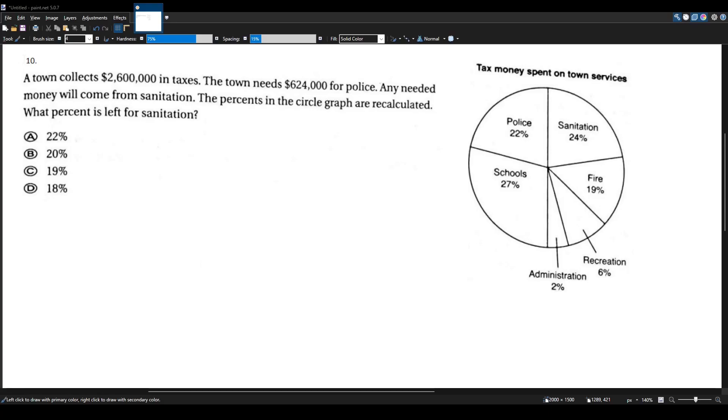Let's solve another math question for the multi-subject CST again for teacher certification. A town collects $2.6 million in taxes. The town needs $624,000 for police. Any needed money will come from sanitation. The percents in the circle graph are recalculated. What percent is left for sanitation?